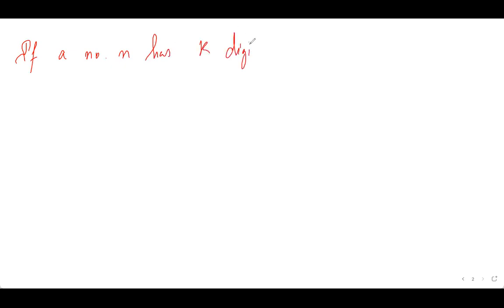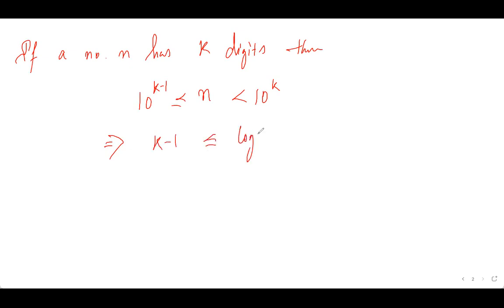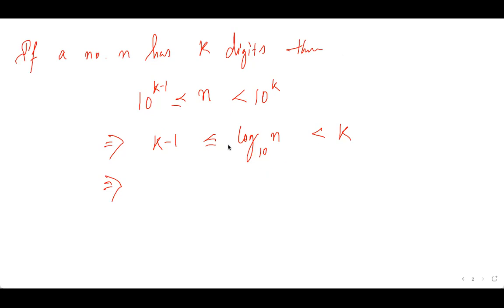If number n has k digits, then n is between 10^(k−1) and 10^k. Taking log base 10 — which is an increasing function, so the inequality is preserved — we get k minus 1 less than or equal to log base 10 of n, less than k. Taking the floor function gives us k equals 1 plus floor of log base 10 n.